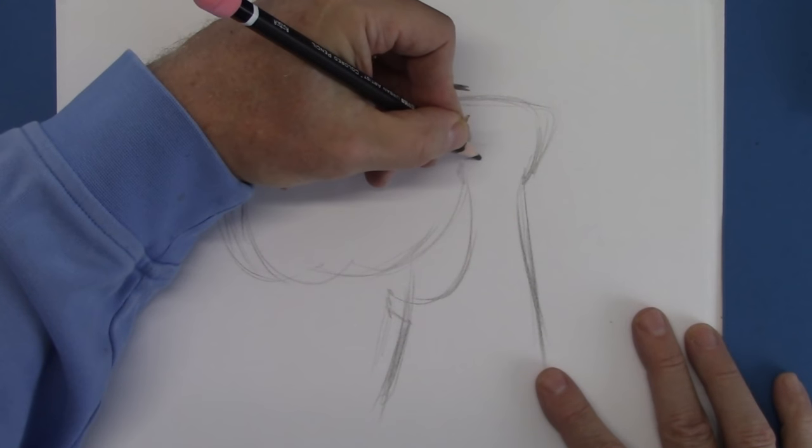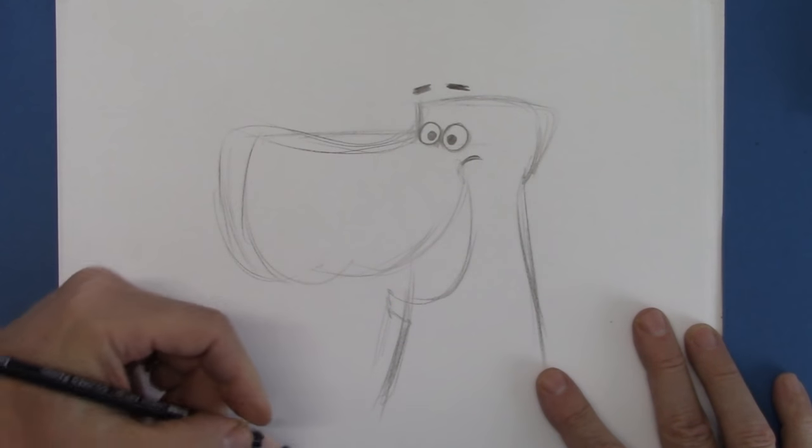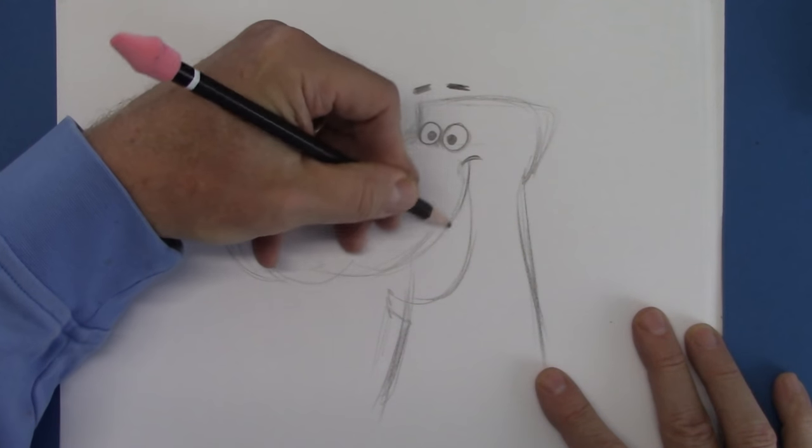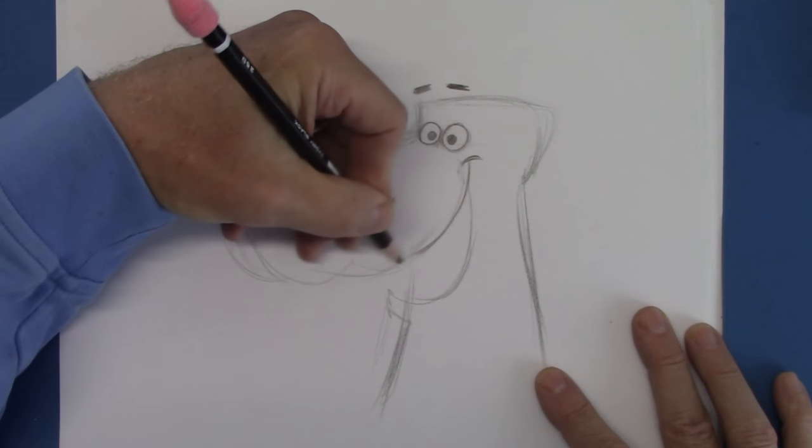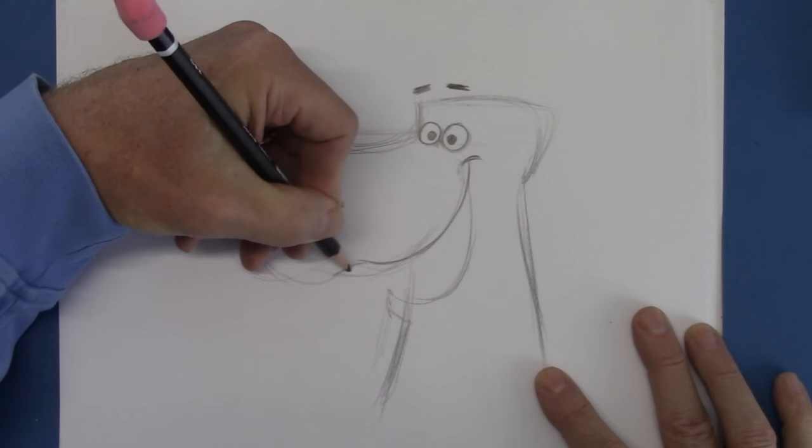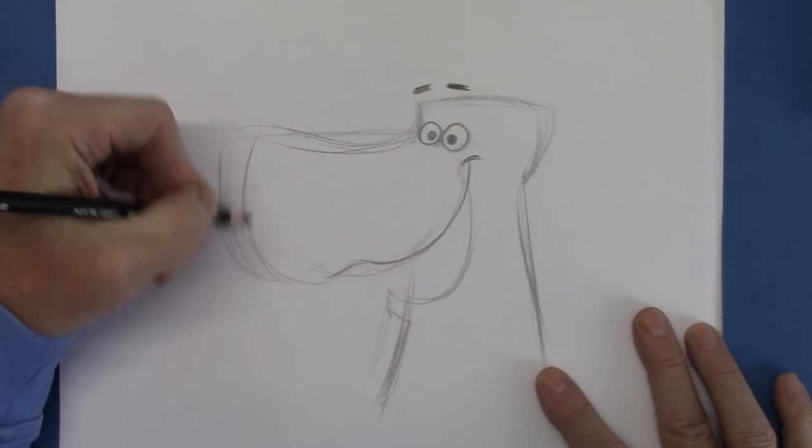All right, so the cheek way up high, way up high, because I'm going to give him a really big smile. And here are the flews, and that's that little part that dips for the dog.